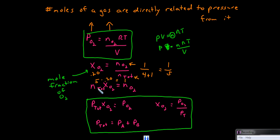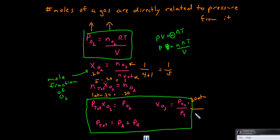Being that the number of moles of a gas is directly proportional to the pressure of the gas, we can replace this equation with the pressures of things. For example, if we had one overall atmosphere of pressure and oxygen made up 20% of the gas — a mole fraction of 0.20 — then the pressure of that oxygen would be 0.20 atmospheres. Or conversely, if you know the pressure of oxygen is 0.20 atmospheres and the overall pressure is one atmosphere, you can find the mole fraction of oxygen: 0.20 over 1 equals 0.20. These are the central equations for partial pressure.